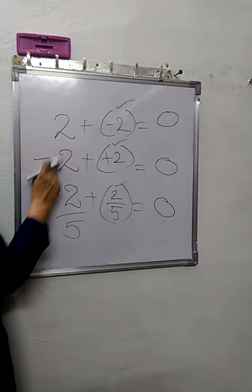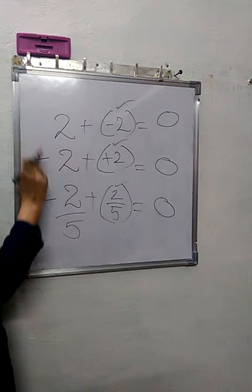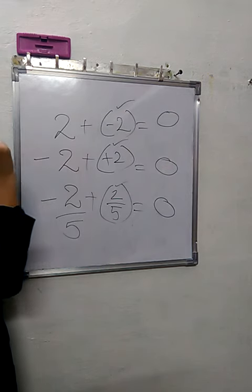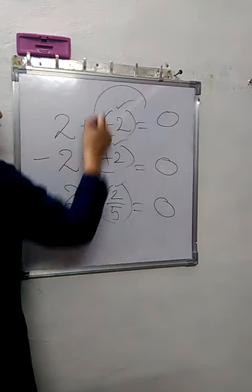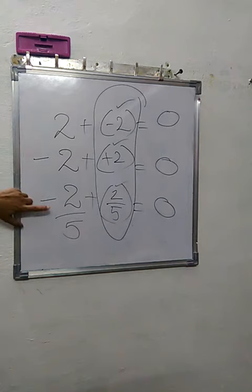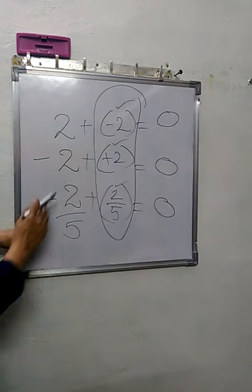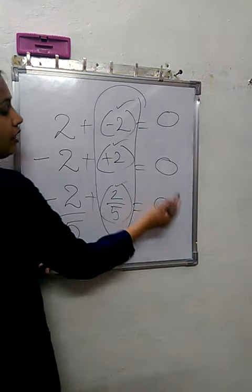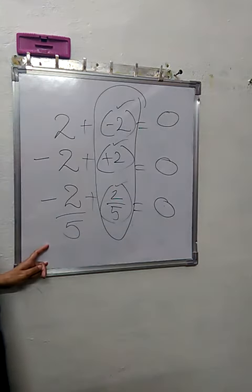Additive inverse of any whole number, any integer, any rational number. So any whole number or any integer or any rational number when added to its additive inverse, then the answer comes out to be 0.